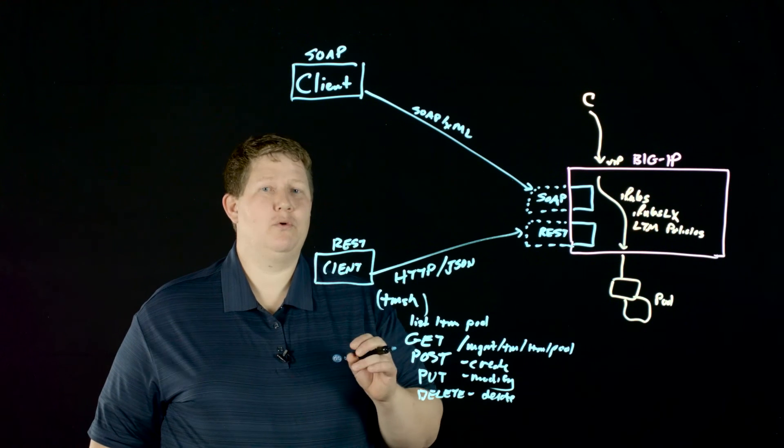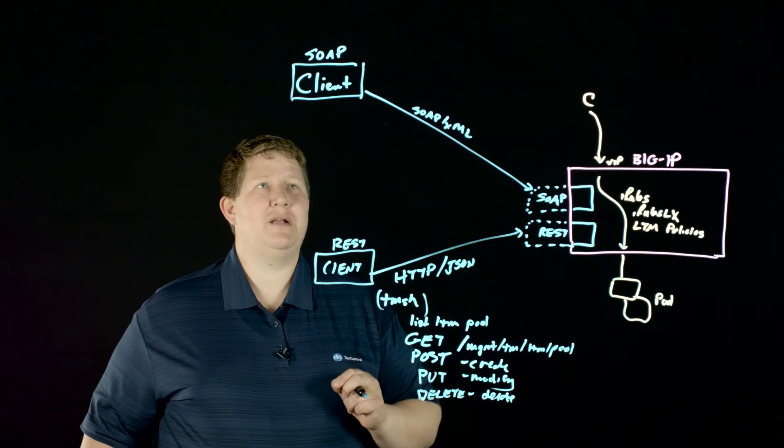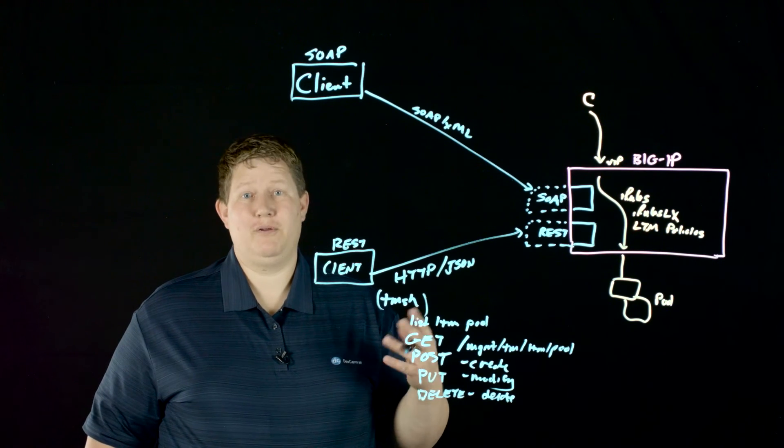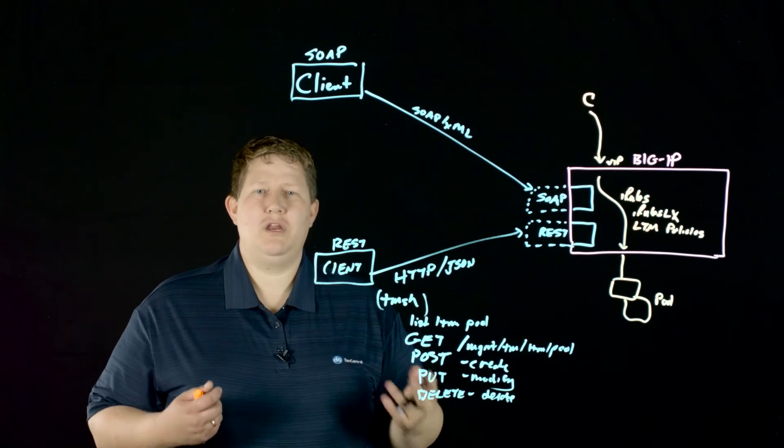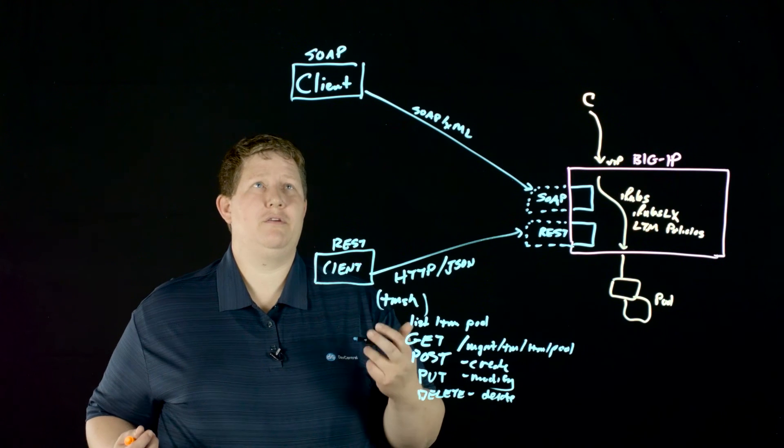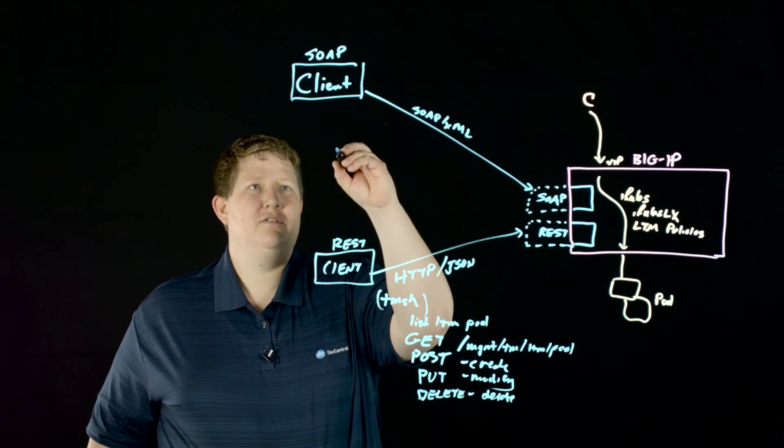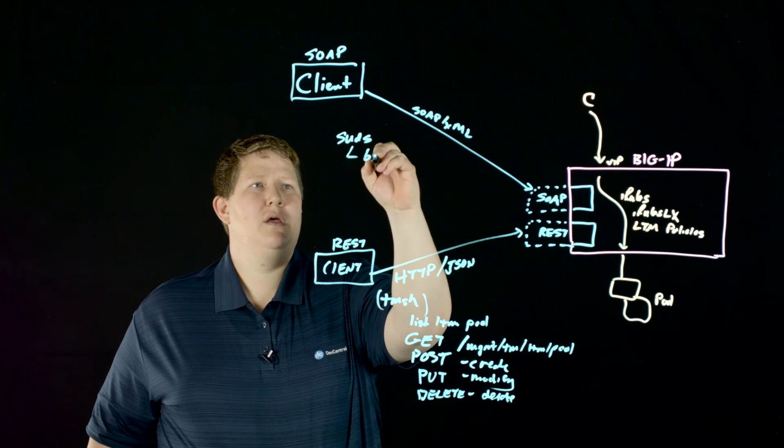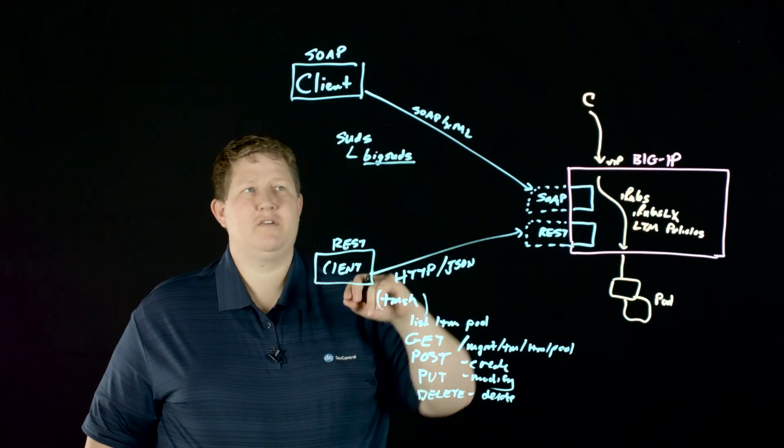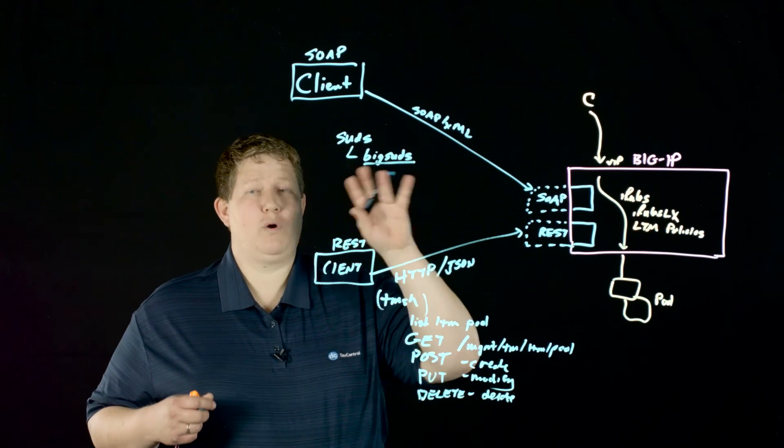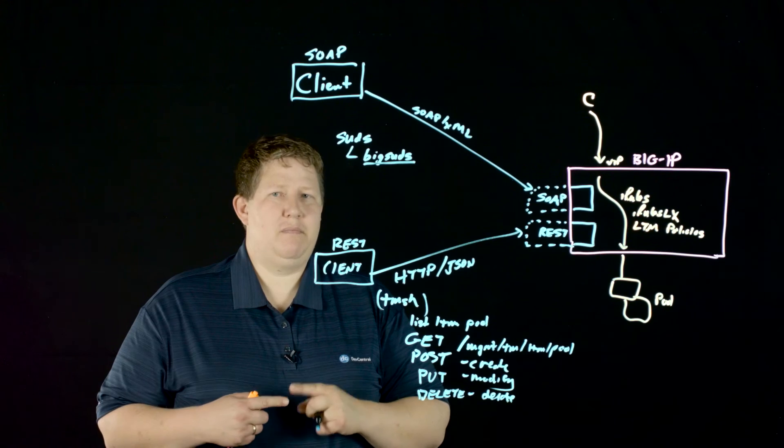You can do it raw. I've done it actually from an iRule to the iControl interface to create and modify iRules just as a fun little project to work on, but it's difficult. It's very challenging to do raw SOAP on the fly. You have a SOAP library, and so you need to find SOAP libraries in whatever language that you're using. I use Python, and so the SOAP library that I use is the Suds library, and that's wrapped into the Big Suds iControl library.